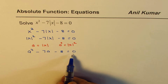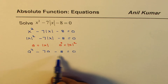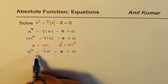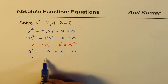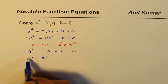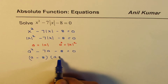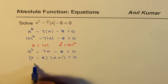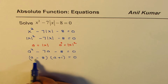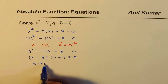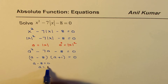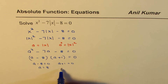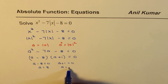Now, that becomes a quadratic equation. So, we could factor this with product as minus 8, sum as minus 7. We could write this as a minus 8 times a plus 1 equals to 0. That gives you two solutions: when a minus 8 equals to 0, that is a equals to 8, and the other one, when a plus 1 equals to 0, that is a equals to minus 1.